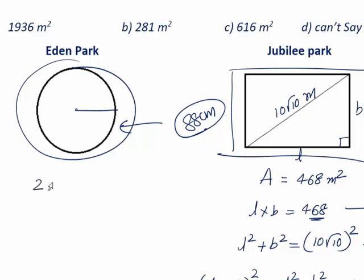2 pi R is 88. That's 2 into 22 by 7 into R is equal to 88. This goes 1 time, this goes 4 time. R value is 14.